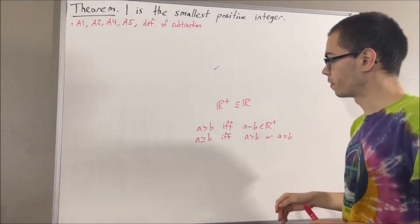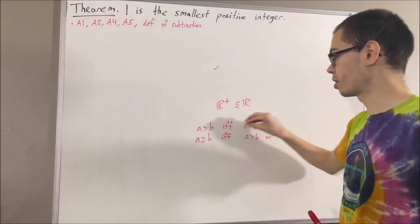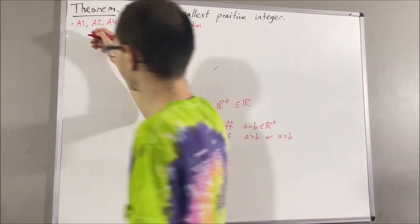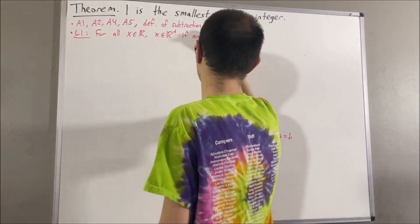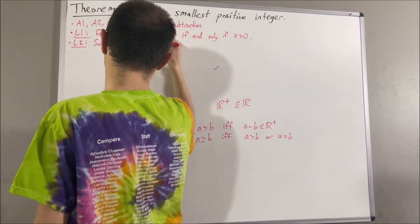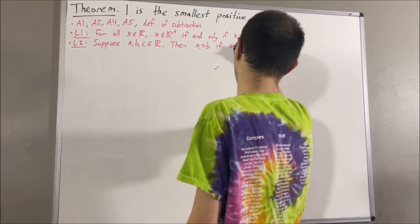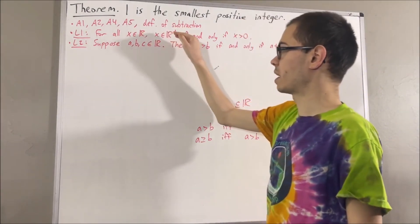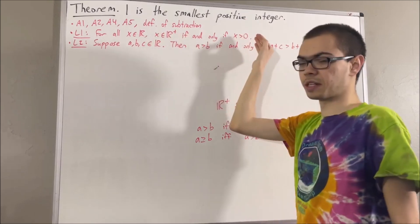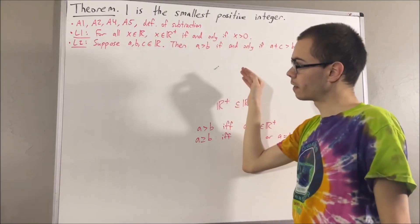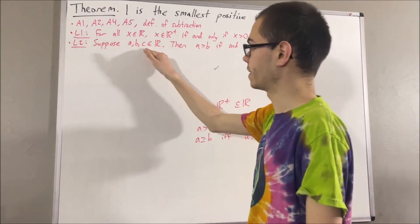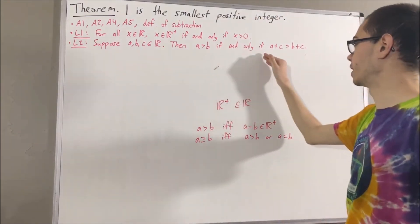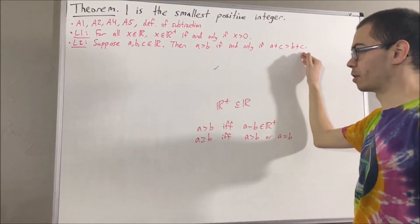Regarding the greater-than relation, we have proven the following two facts. First, for all real numbers x, x is a positive real number if and only if x is greater than zero. Second, given real numbers a, b, and c, a is greater than b if and only if a plus c is greater than b plus c.